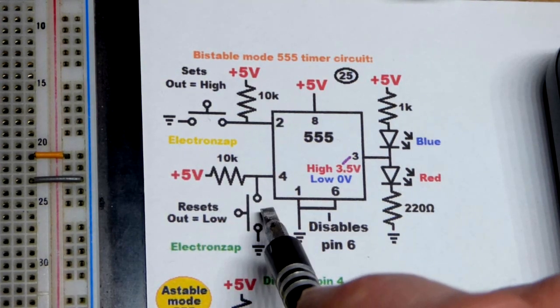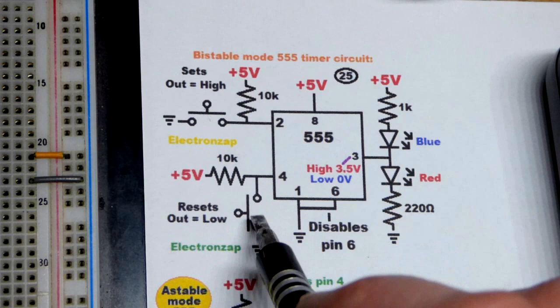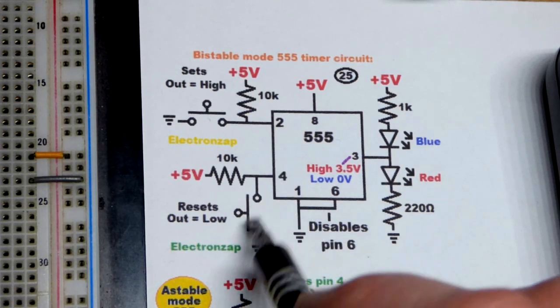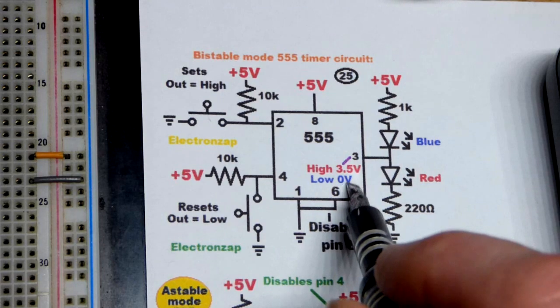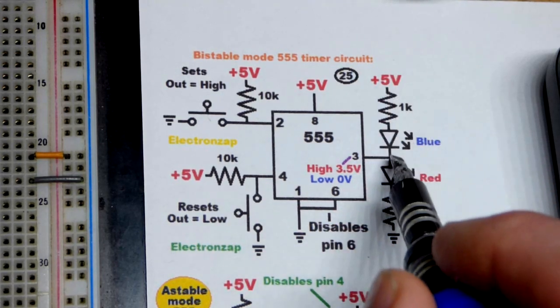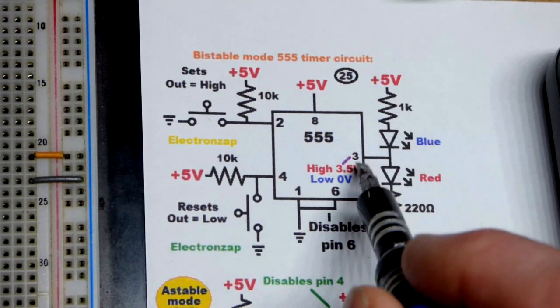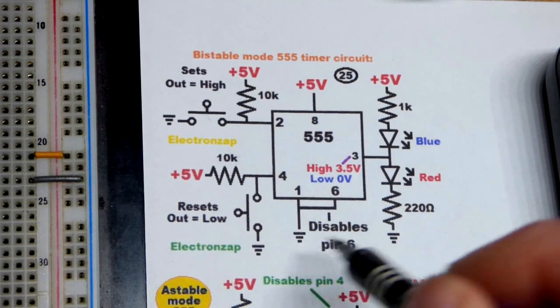And then if you press the reset button here that's the reset pin you give a low input. It's also active low right there and it sets the output low. And so the way we have it wired up the blue LED lit up and current went to ground.